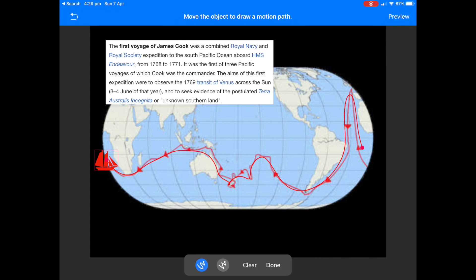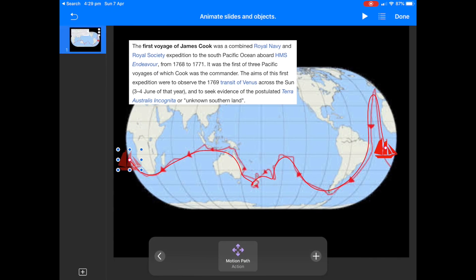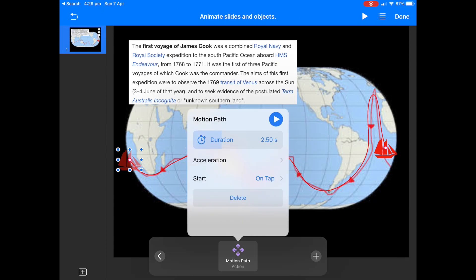You can see there it shows the little journey and what we can do there is we can press on that motion path as well and change a few things. So if we press on it we can change the duration that it takes, when the animation actually takes place, whether that's on a tap or with another build, for example we can do that as well.